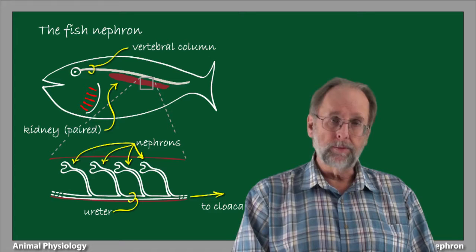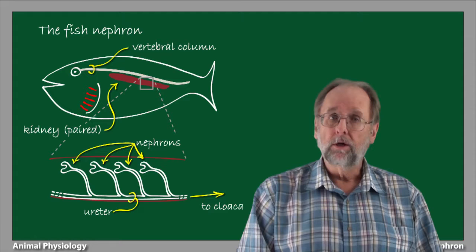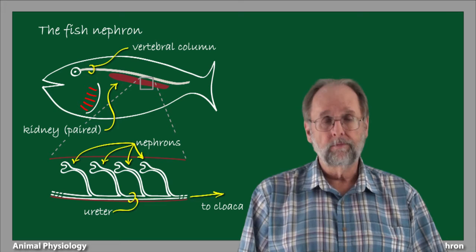The word cloaca is Latin for sewer, and it's an apt description because the cloaca is the common receiving point for both urine from the kidneys and feces from the digestive tract. The cloaca, in turn, opens up to the outside of the body through an opening known as the vent.